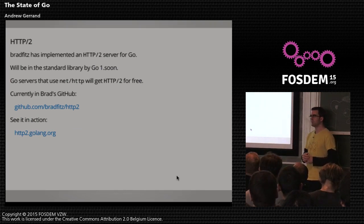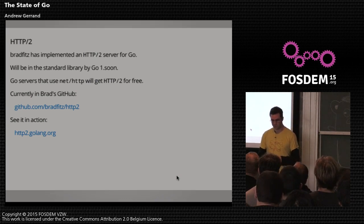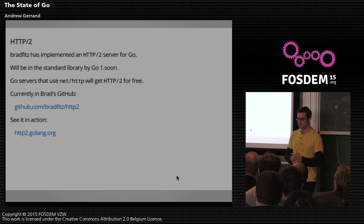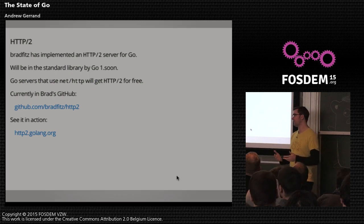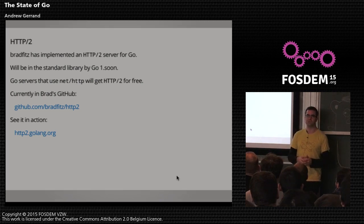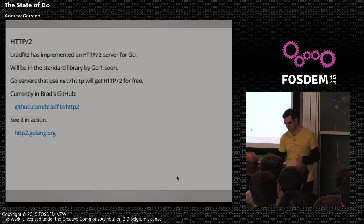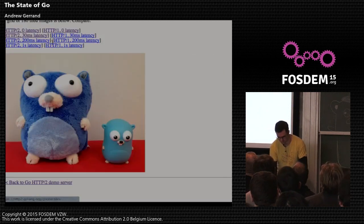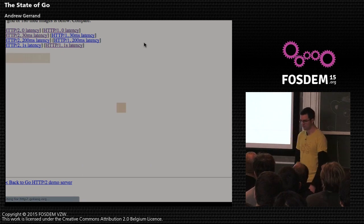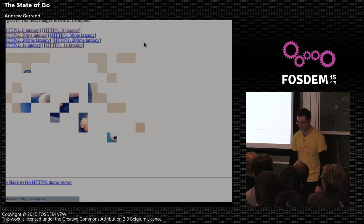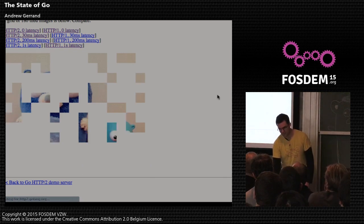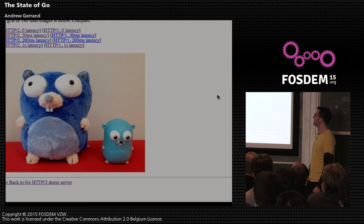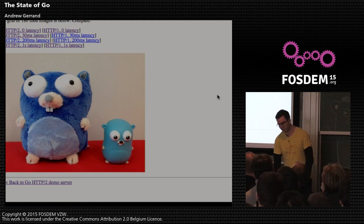If you saw Brad's talk on HTTP/2, you know that's coming — it's probably not in 1.5 because the spec isn't standardized yet, but it will be in the standard library at some point. It means that if you have a Go HTTP server, when the HTTP/2 spec is stabilized it will become an HTTP/2 server for free — you won't have to do anything. HTTP/2 lets you pipeline requests and the results are dramatic, particularly on mobile platforms.